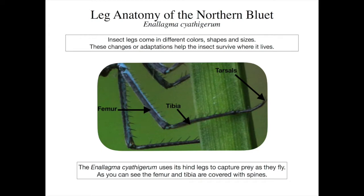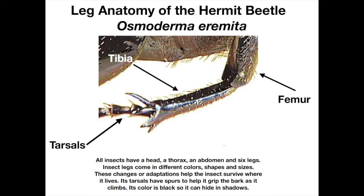For example, the northern bluette has hairs on its hind legs that are helpful for grasping, courting, walking, and climbing. They are also used to capture prey in the air while flying. The hermit beetle has spikes and hairs on its legs, mostly on the tibias and tarsals. It uses this body part to climb up trees, which is where its natural habitat is.